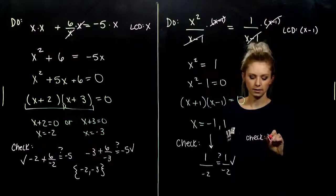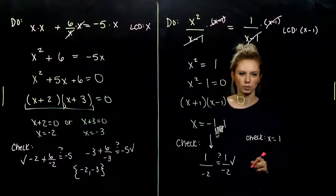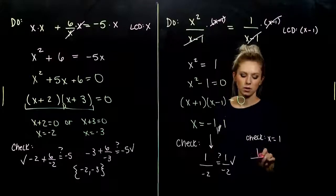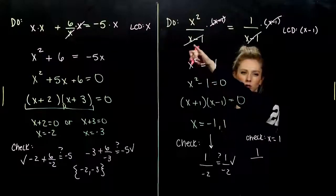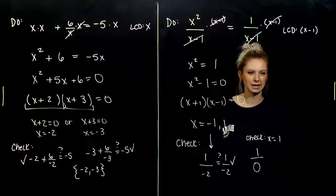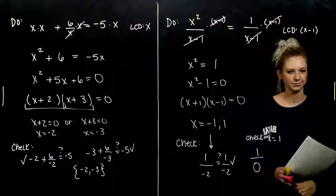And now, checking x equal to positive one. When I plug that in, what do I get up top? One. What do I get down below? Zero. Am I allowed to divide by zero? No.